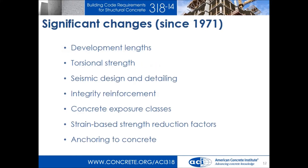Not only did we get new chapters, we got new ideas placed in them. Take integrity reinforcement, for example — we put that mostly in chapter 7 because it's extra bars and that's a detailing chapter. But there's also special detailing for two-way slabs and for precast, so those requirements end up in multiple locations. We are now at 2,000 cross-references in our code. Remember, we only have 2,500 requirements in 318-11. With 2,000 cross-references, we're starting to understand the problem.